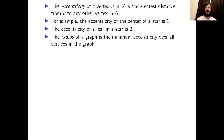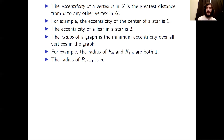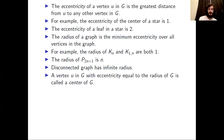We define the radius of a graph to be the minimum eccentricity over all vertices. Both the complete graph of order n and the star of order n+1 have radius one. A path of order 2n+1 (an odd number of vertices) has radius n. A disconnected graph, by the definition of radius, must have infinite radius.